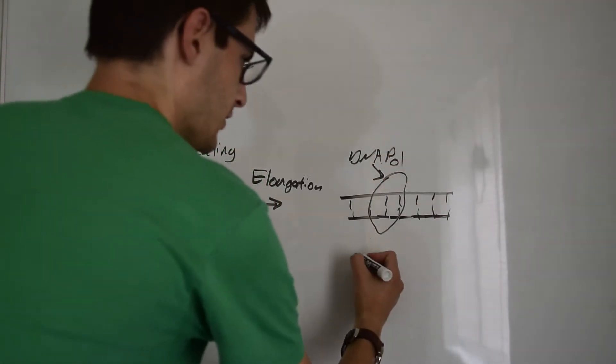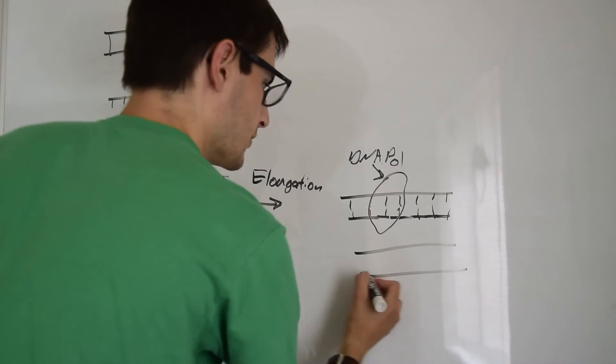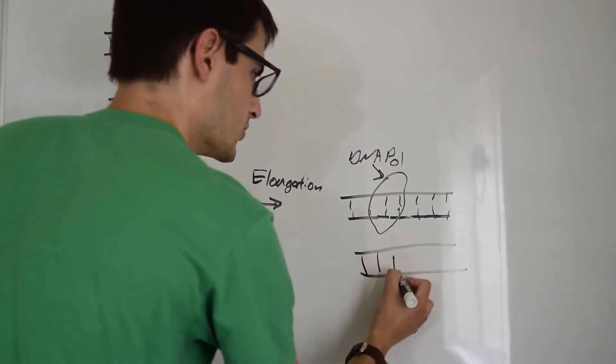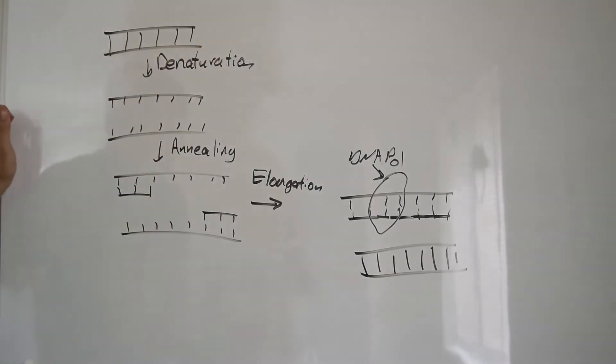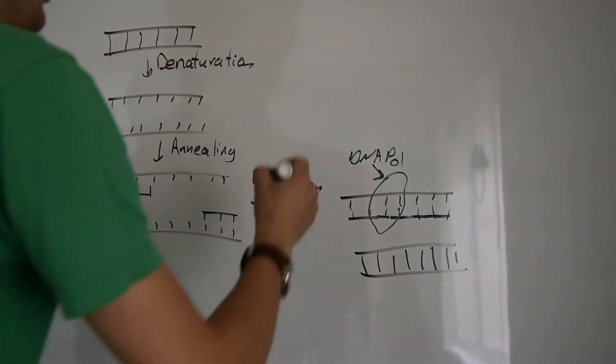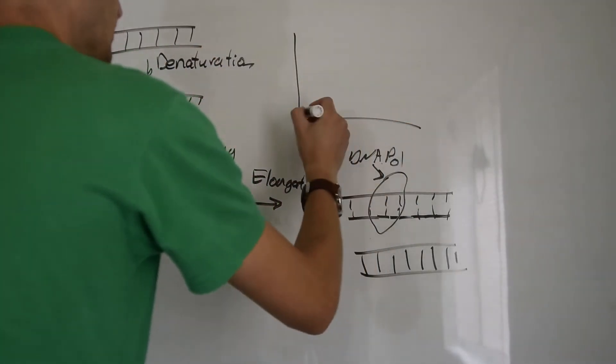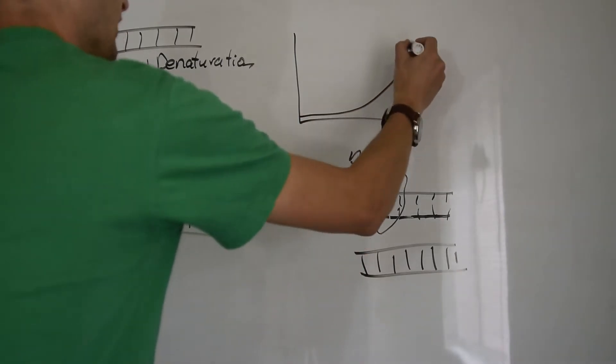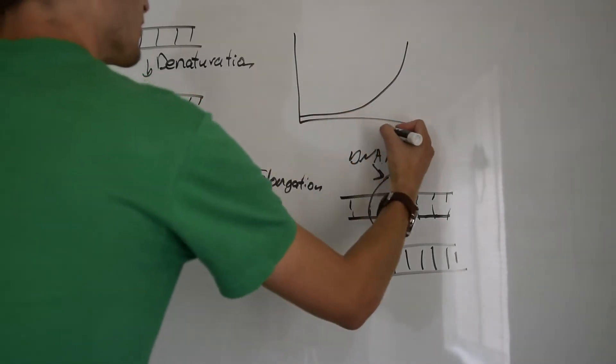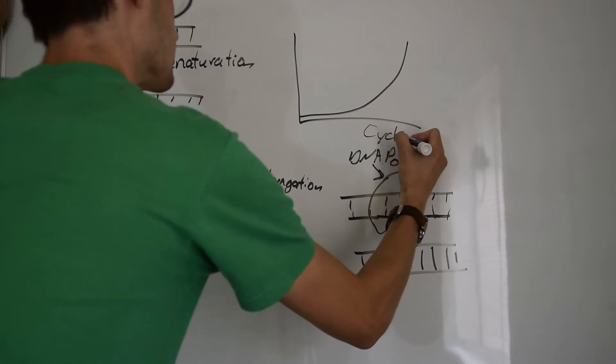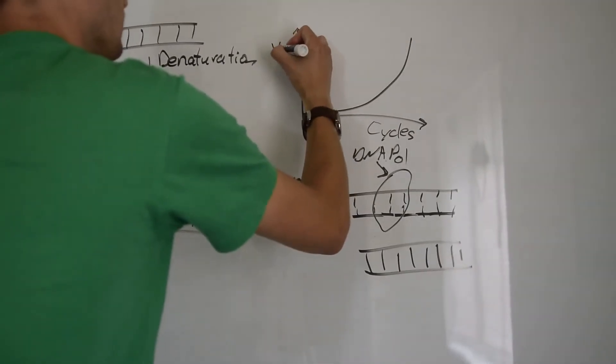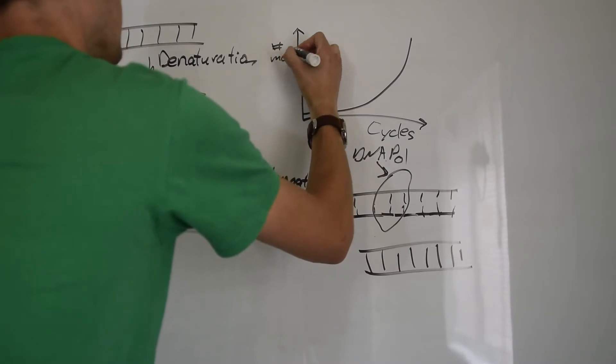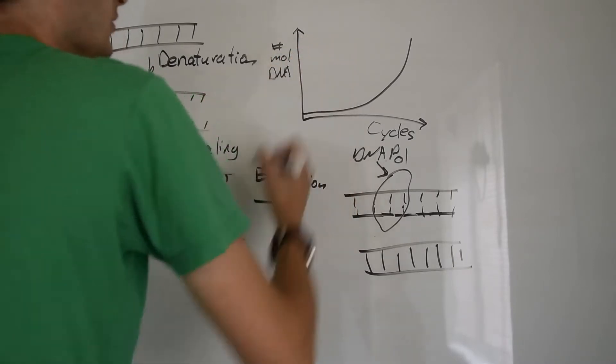Because of this process, where one becomes two, two will become four, and so on, this is geometric growth. And so as the number of cycles increases, the number of molecules of DNA also increases, but does so very rapidly. Generally, we may do this for something between 25 and 35 cycles, and produce a huge amount of DNA until we run out of substrate. So those products end up going back to the denaturation and continue on.